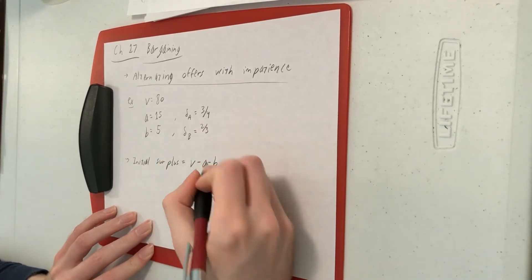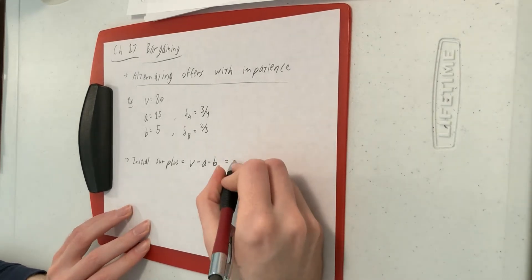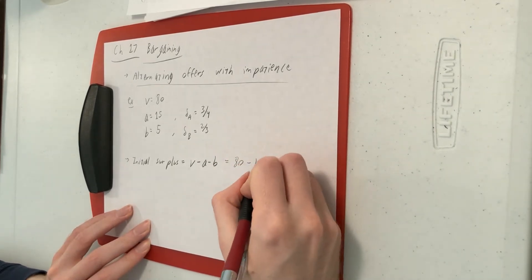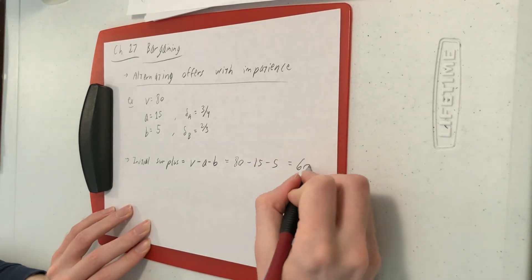In the beginning, the surplus is going to be V minus the BATNAs. That is 80 minus 15 minus 5, which comes out to 60.